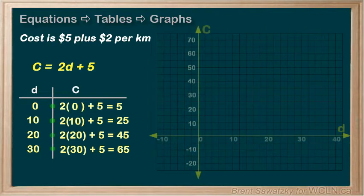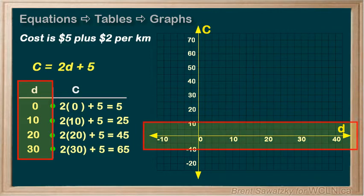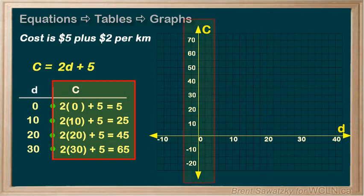Next, let's convert our relationship from table form to graph form. We do this by showing each set of data, or ordered pair, on our graph. Our graph will have the first variable, or independent variable, on the horizontal axis, going left and right, and the cost on the vertical axis, going up or down.